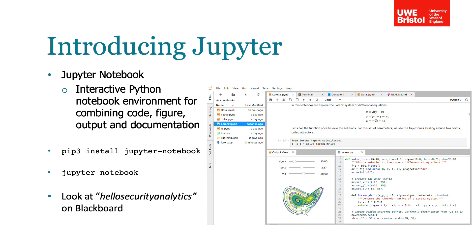Key Python data science libraries include: NumPy (Numerical Python), SciPy (Scientific Python), Matplotlib (a graphing library originating from MATLAB conventions), Pandas (powerful data analysis), Scikit-learn (machine learning), TensorFlow, Keras and PyTorch (deep learning), and NLTK (Natural Language Toolkit).